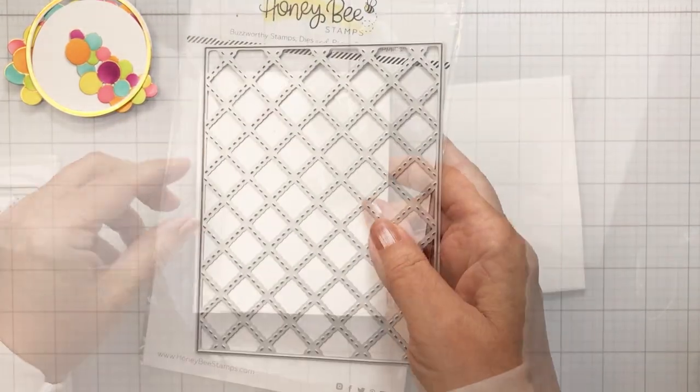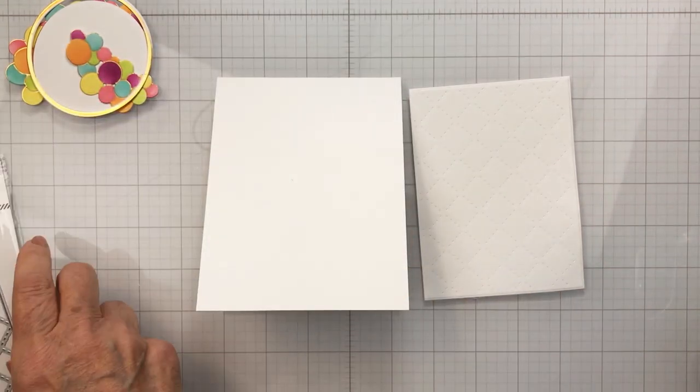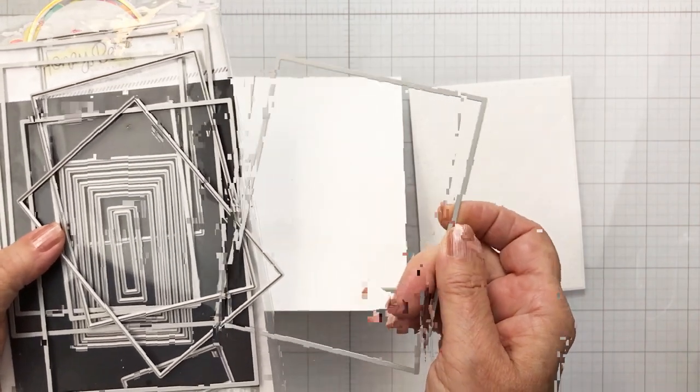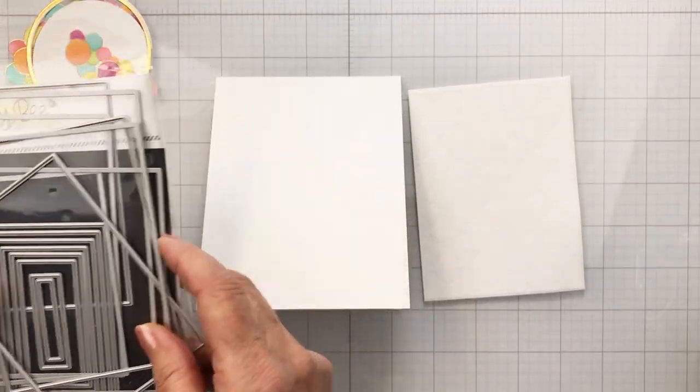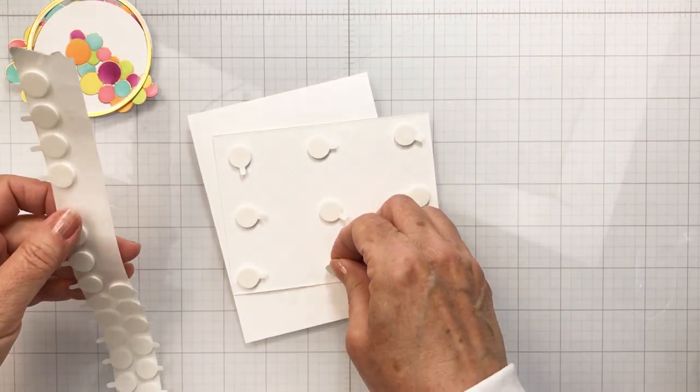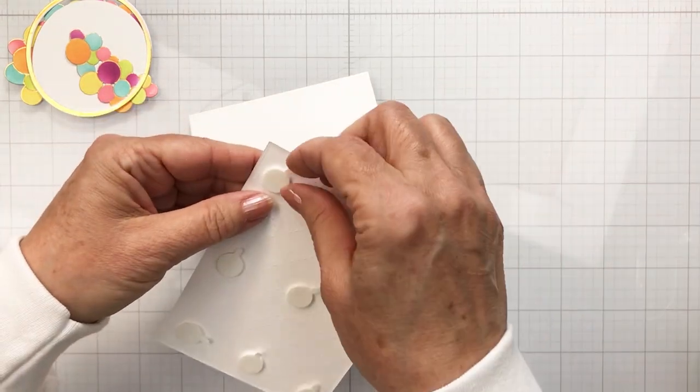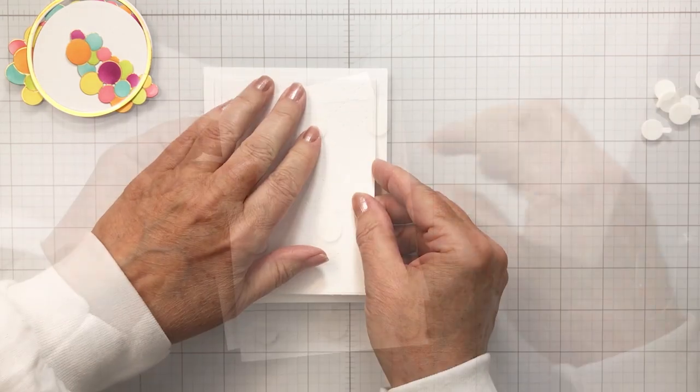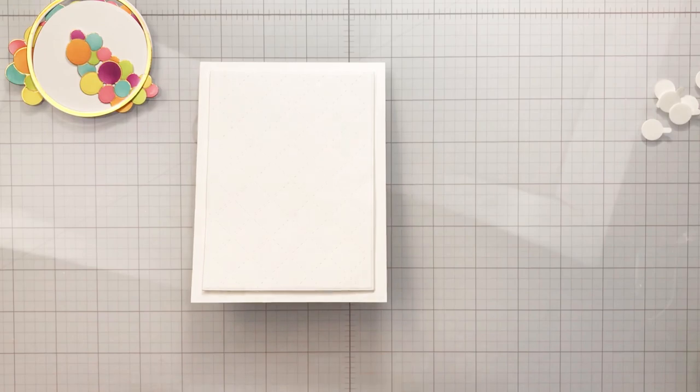Now I used my A2 quilted cover plate to create a little bit of interest in the background here. I went ahead and added that through my die cutting machine with some cardstock and then I cut that out with my Sweet Stacks Rectangles dies, just one of the dies that's going to be a little bit smaller than the A2 size card base that I'm using here. I'm going to add that quilted cover plate piece onto my card base.